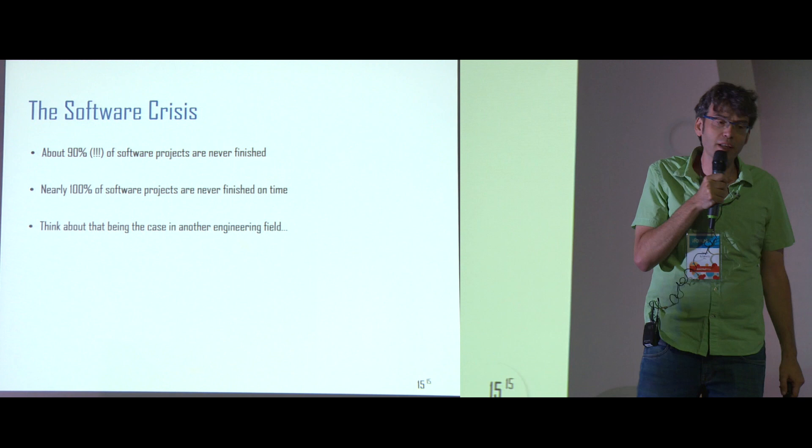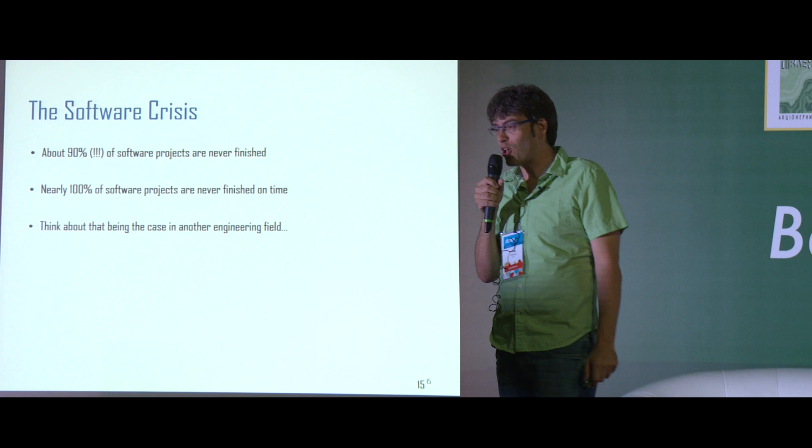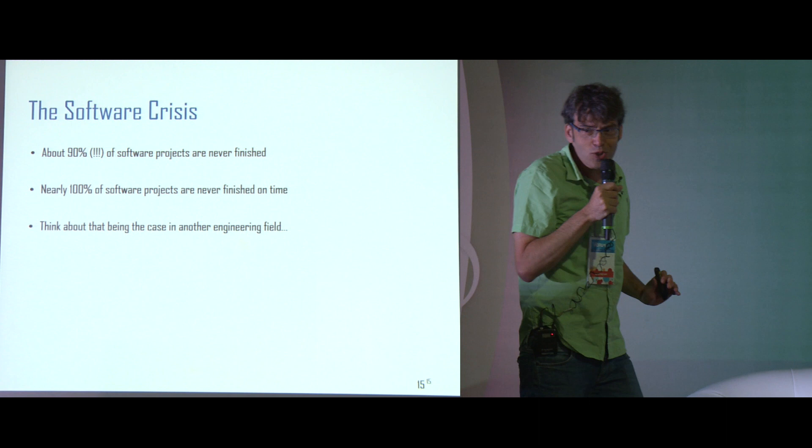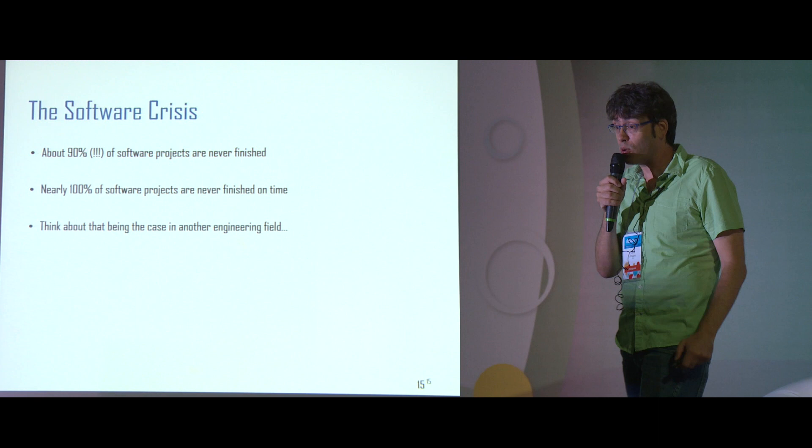A manager goes to the product manager and asks when the project will be finished. The product manager goes to the software engineer, who says January. The product manager, being careful, tells the manager March. The manager, being careful, tells management they'll launch in June. And the product is actually launched in January of the following year — and that's if it was launched at all.